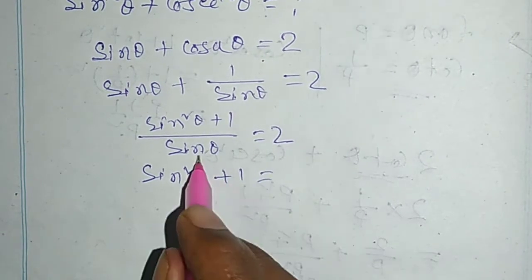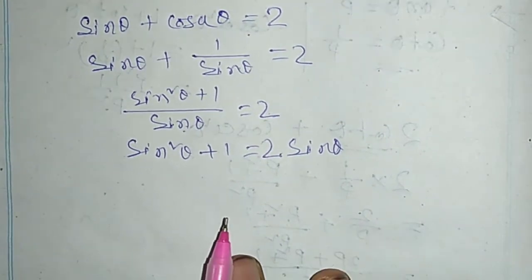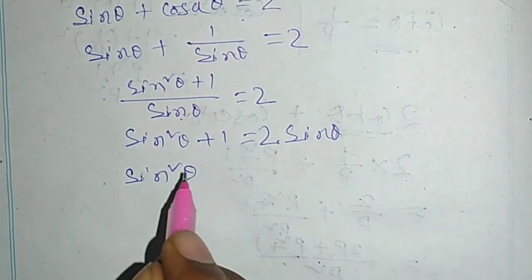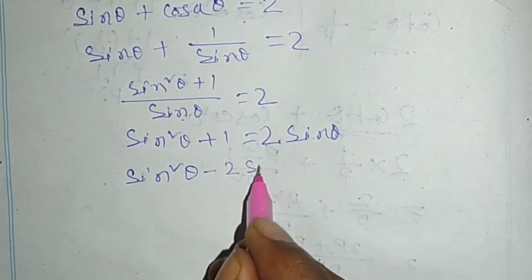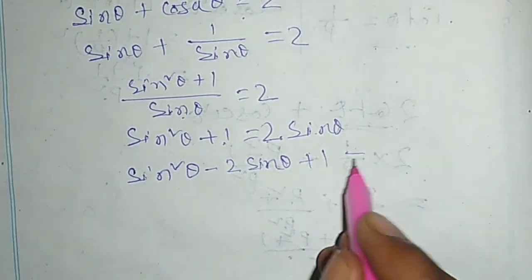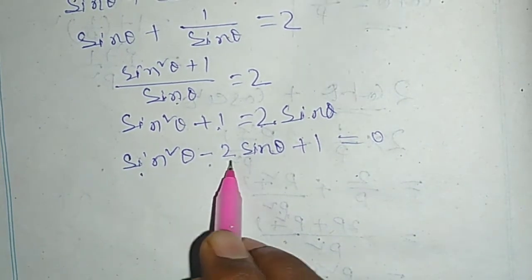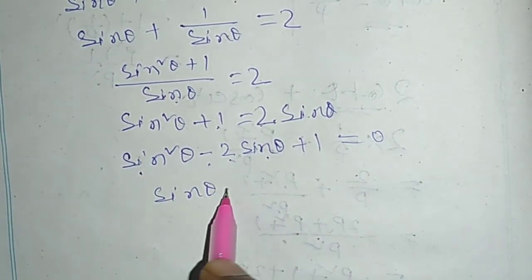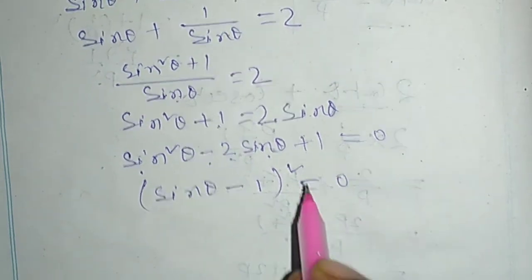sin² θ plus 1 equal to 2 sin θ. sin² θ plus 1 equal to 2 sin θ minus 2 sin θ plus 1 equal to zero.